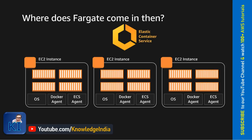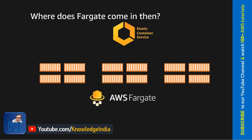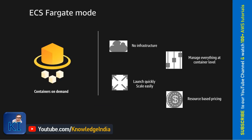Once you adopt the Fargate model, you don't see any EC2 instances. EC2 instances won't be visible in your EC2 dashboard. You become free from managing the instances altogether. All you have to do is specify what would be the size of your container — how much CPU and memory is available — and just with that definition, your container gets created. You don't have to manage any EC2 instances at all. No infrastructure to manage, you can launch quickly, and pricing is based on every container level.